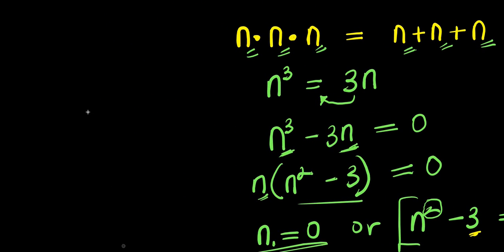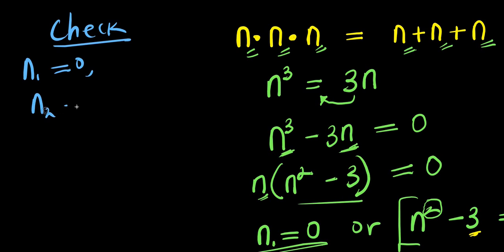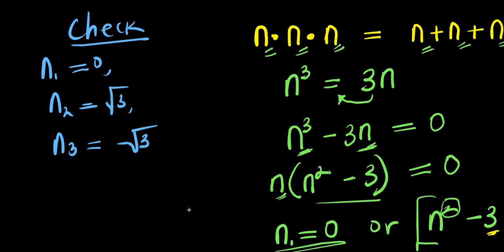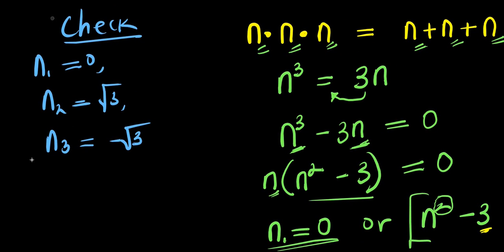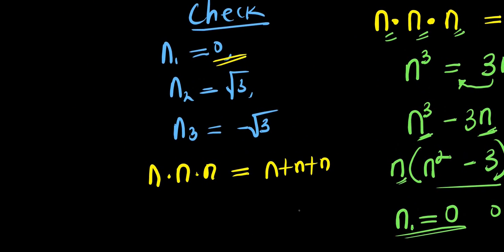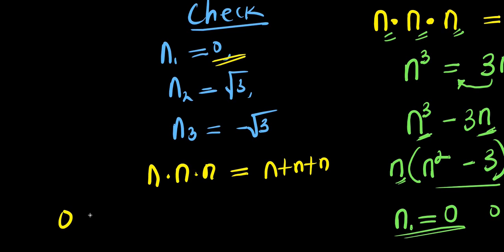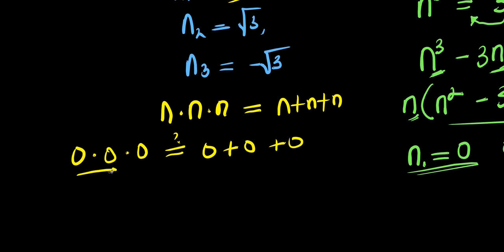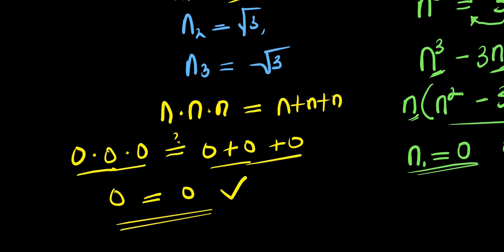The next thing we are going to do is check each of these values to confirm they satisfy the equation n times n times n equals n plus n plus n. Starting with n₁ equals zero: substituting zero, we have 0 times 0 times 0, which equals 0 plus 0 plus 0. So 0 equals 0 — that has proven to be correct.